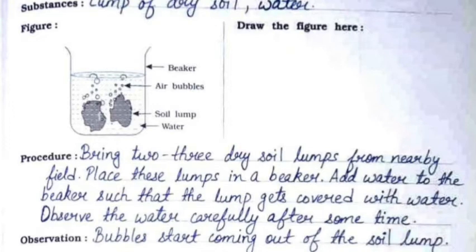Continuing with the procedure: bring 2 to 3 dry soil lumps from a nearby field. Place these lumps in a beaker. Add water to the beaker such that the lumps get covered with water.